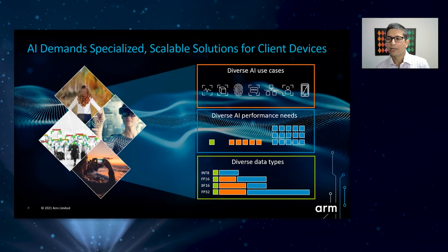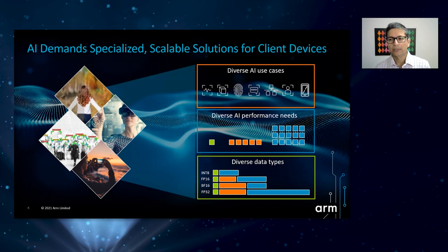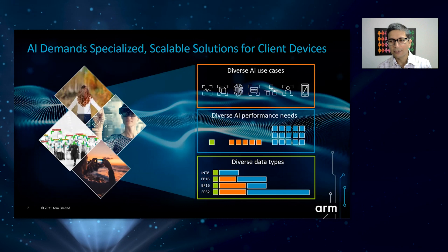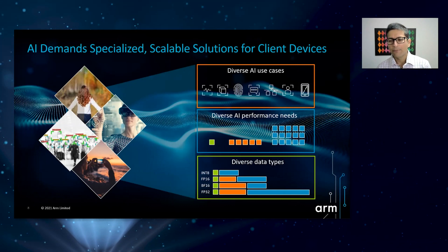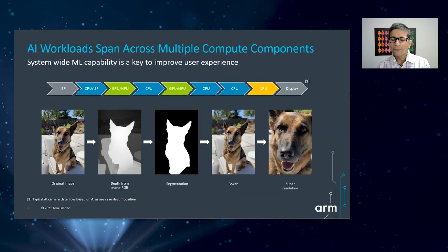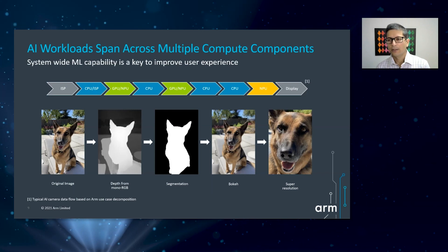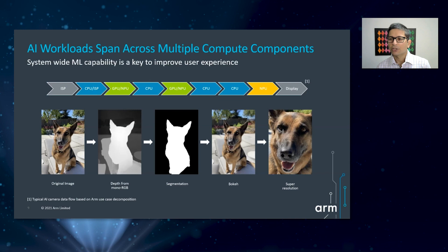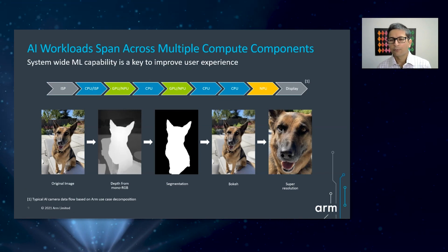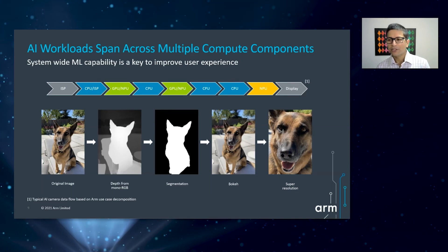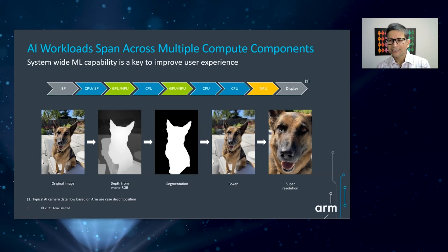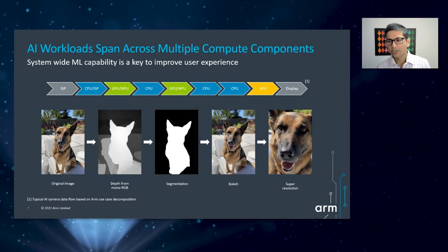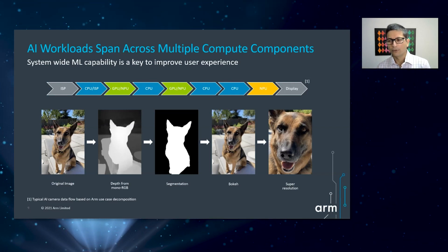Let me highlight the AI compute capabilities in our solutions. There is an explosion of AI use cases across all categories of client devices. Future client devices will need the capability to support diverse AI use cases with very different and varying performance requirements. AI workloads are not restricted to a single compute component, but span across multiple compute engines. One common use case is the portrait mode, a key feature of modern smartphones that allows anyone to capture professional quality images and videos. This seemingly simple feature is computationally quite complex, requiring several compute-intensive photography techniques executing in real-time. It is easy to think that the Neural Processing Unit, or the NPU, solves this complex problem on its own.